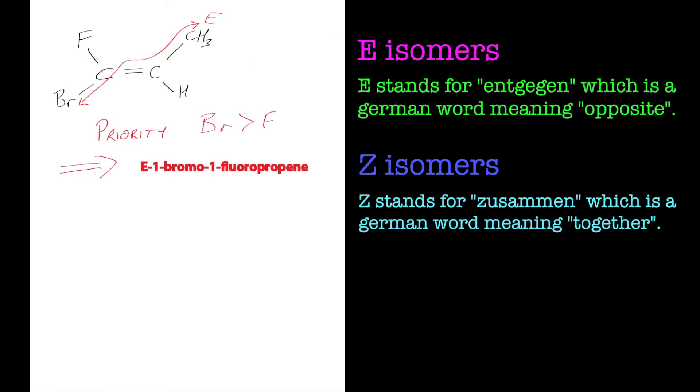Now if we swap the bromine and fluorine around, you have to watch this, it's quite subtle. There we are, we've swapped them around. It becomes the Z-1-bromo-1-fluoropropene. So that's a quick introduction to the E and Z naming system.